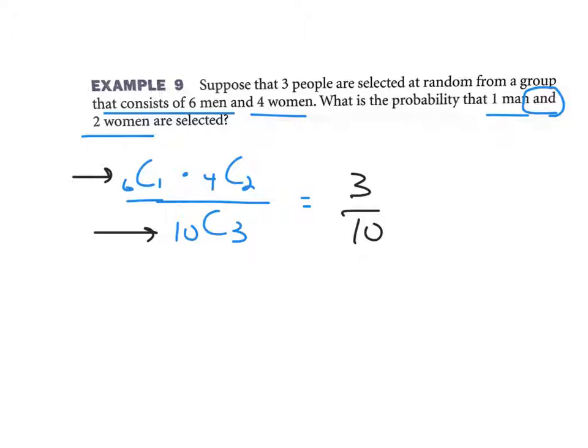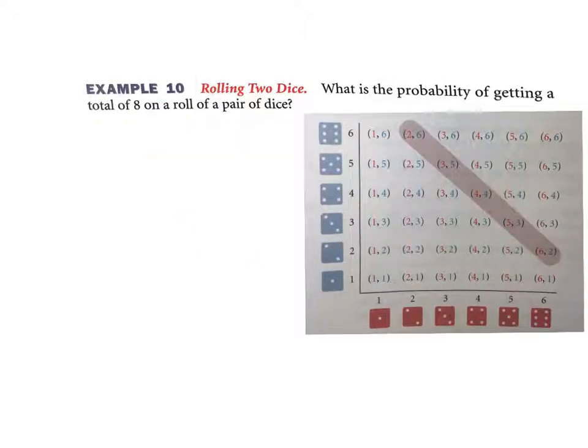Last one here. Rolling two dice. What is the probability of getting a total of eight on a roll of a pair of dice? Okay, so when you roll the first dice you have six different outcomes you could get. Sample space is six, one through six. The second one is also six. So if you roll two of them, you have six times six, or you have 36 different possibilities you could get. So that's going to be my denominator: 36 different outcomes when you roll two dice.